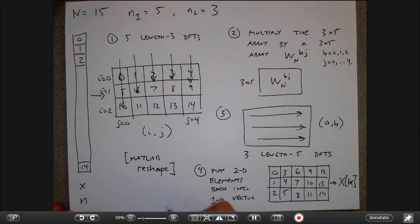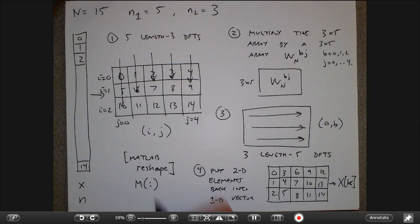This is the most important picture of the day. To recap: take the original signal, make a 2D array by putting elements in row order, take DFTs down the columns, multiply by the special twiddle factor matrix, take DFTs across the rows, then remove elements from the matrix to get back to a long vector. A handy MATLAB command: if you have a matrix M, doing M(:) takes all elements out and puts them back into a long skinny vector. The reshape command and the colon operator are the main tools you need.